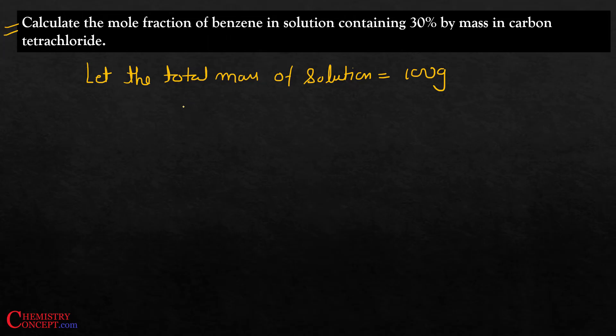Then what will be the mass of benzene? Mass of benzene will be 30 percent, so it will be 30 grams of the total mass of the solution. What will be the mass of carbon tetrachloride, CCl4? Any guess? Definitely the remaining 70 grams.